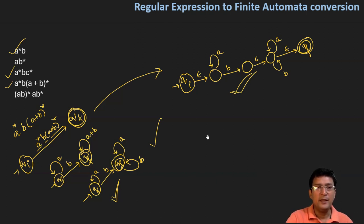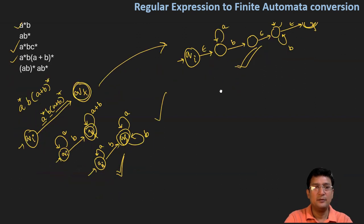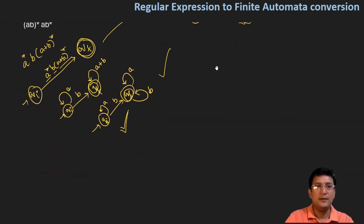Next example is (AB)* followed by AB*. (AB) whole star and then AB star. This is interesting - you have three components here. Pick initial state and then pick final state.